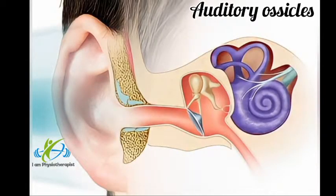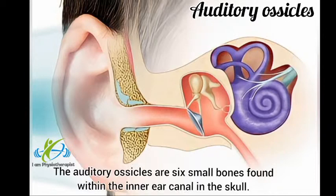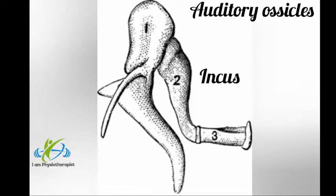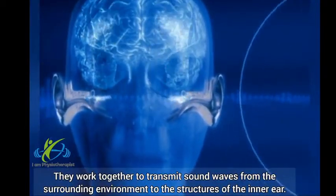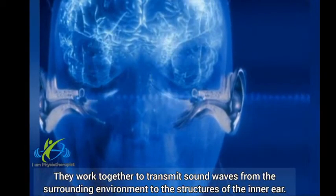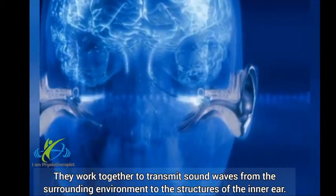Auditory ossicles: The auditory ossicles are six small bones found within the inner canal in the skull. These bones include the Malleus, Incus, and Stapes. They work together to transmit sound waves from the surrounding environment to the structures of the inner ear.